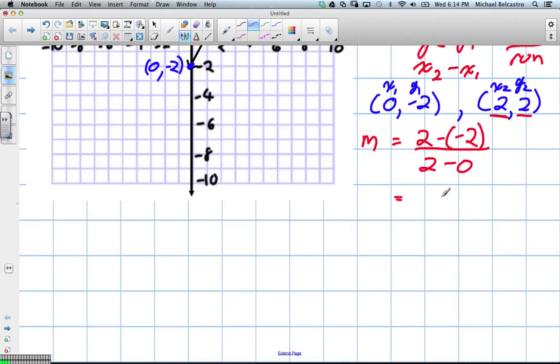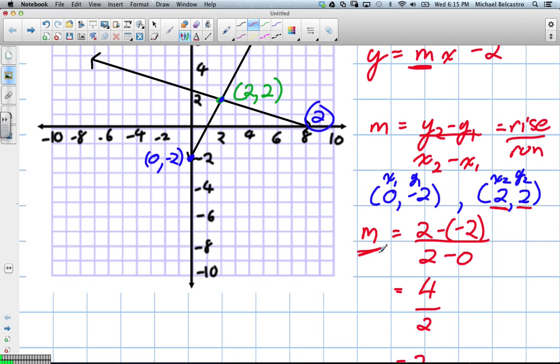2 subtract negative 2, do you know what it's going to give you? Should give you a value of 4. We've got to make sure to type it in the problem. And then the other value, 2 subtract 0, is 2. 4 divided by 2 is 2. So our m is a value of 2.